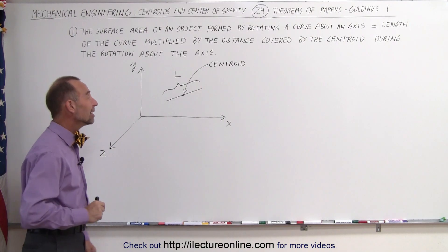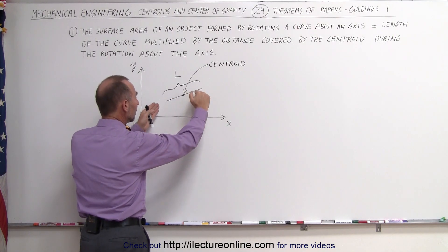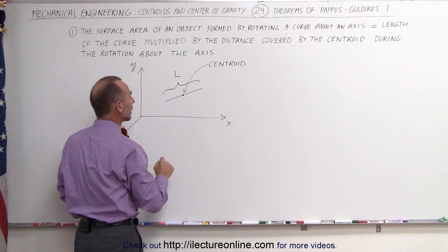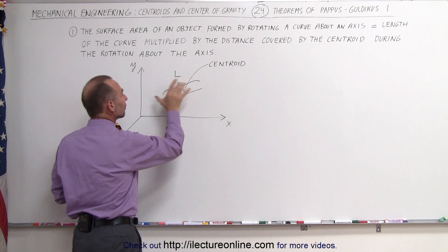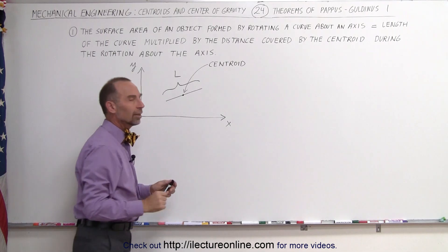That's a lot of words but really what that means is let's say we have a curve, in this case a straight line here at an angle away from the x-axis. This is the length of that curve and this is the centroid of the curve right in the middle of that particular line.